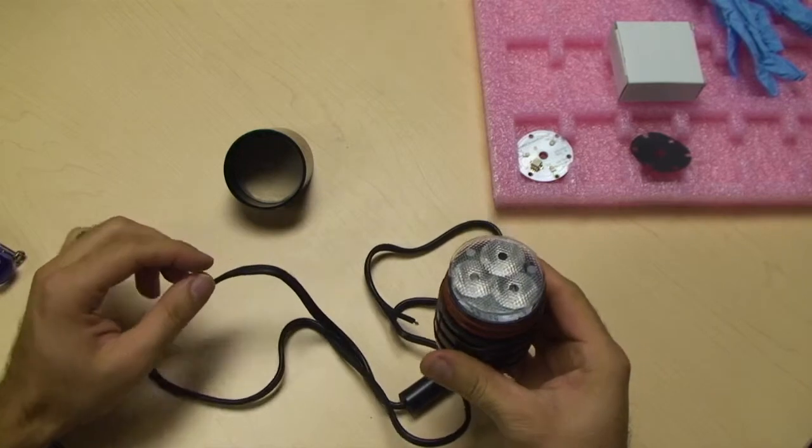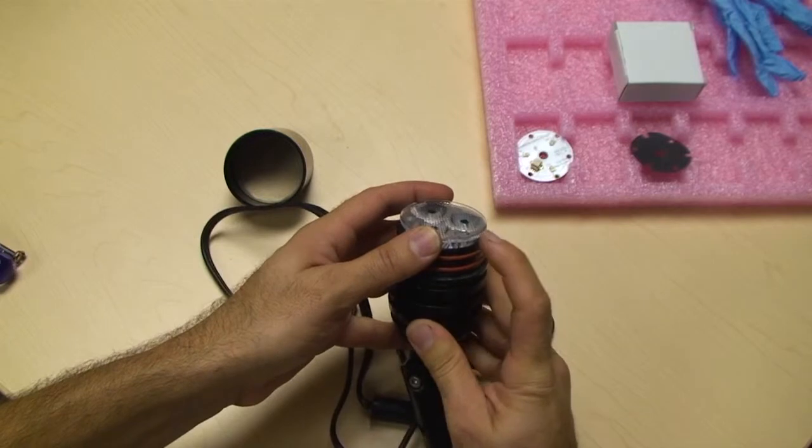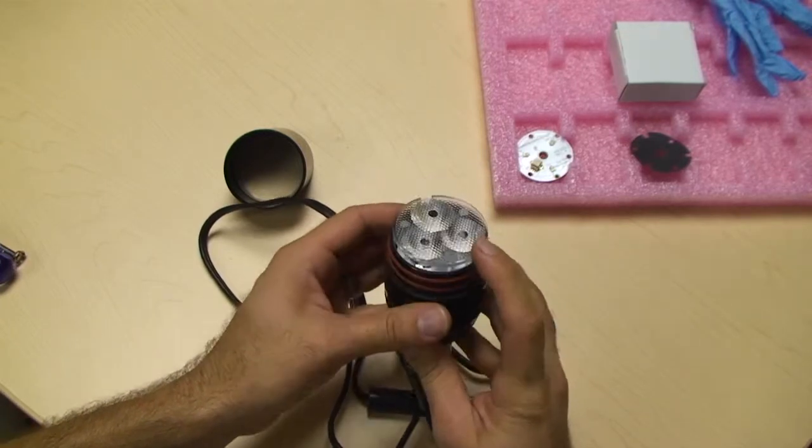Step 3. Gently wiggle the optic to identify which leg is glued. Only one out of the three legs has glue on them.